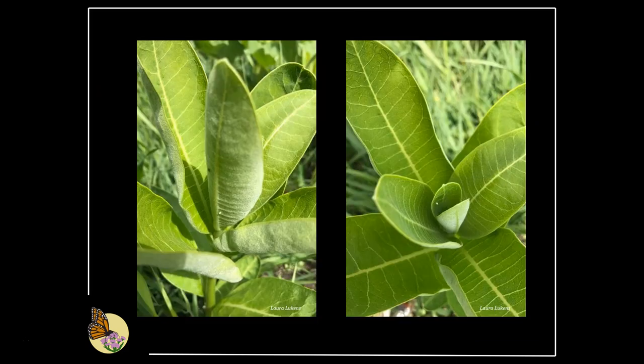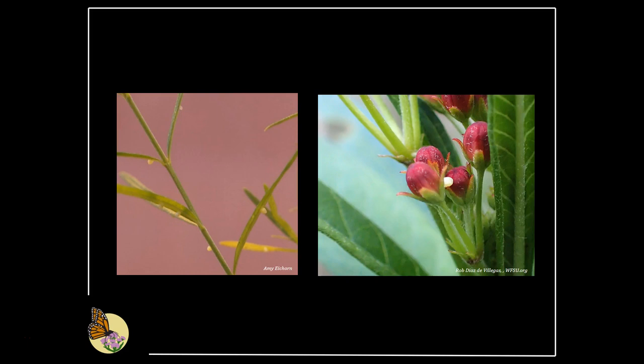Here are eggs on the underside and the top of young common milkweed leaves. Eggs can be laid on any part of the milkweed plant — the top or bottom of the leaf, the stem, flower bud, or the open flower. In these images, eggs are on the stem, the leaf undersides, and the flower bud.